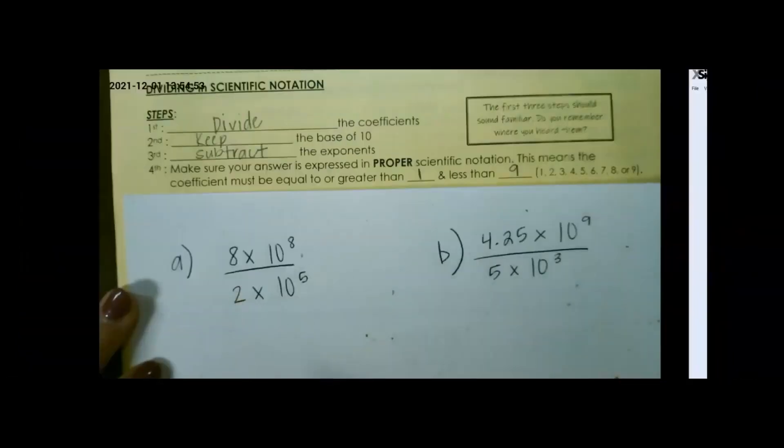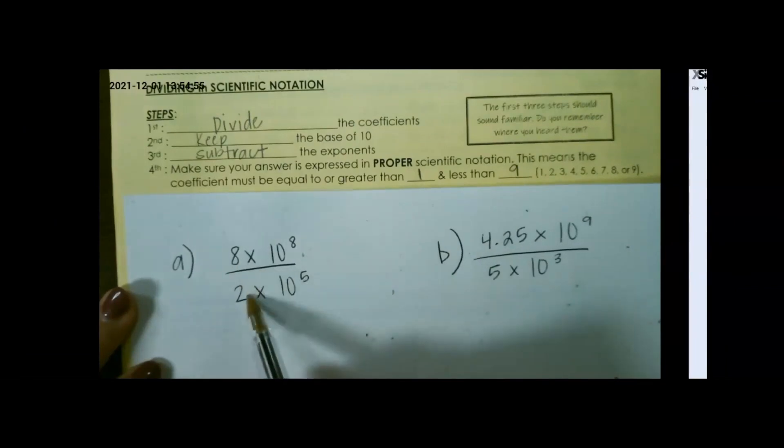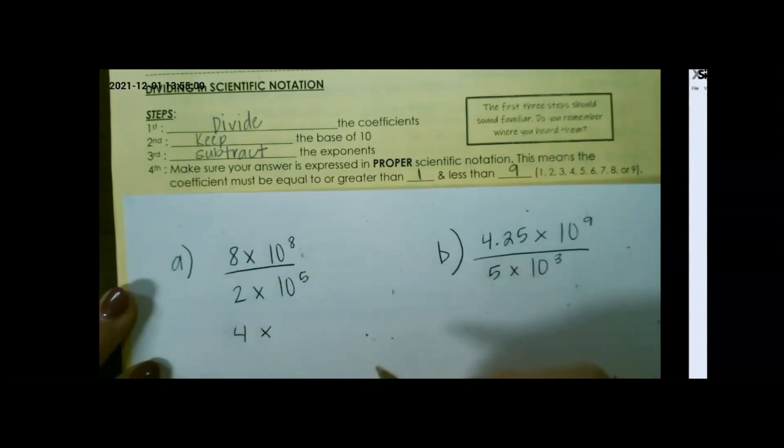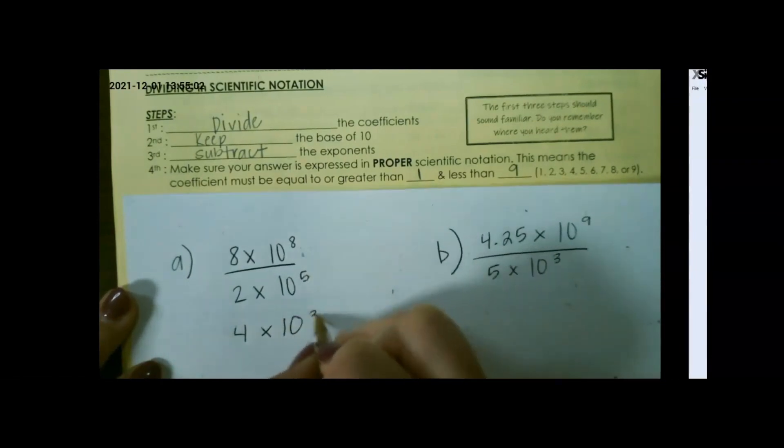So let's look at our examples. First, we divide the coefficients. 8 divided by 2 would give me 4, and then we subtract our exponents. 8 minus 5 is 3.